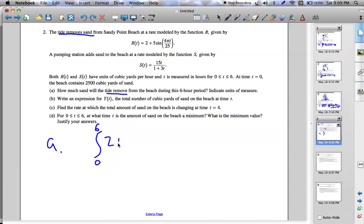So, R of t, which is 2 plus 5 sine of 4 pi t over 25, dx. And this is a calculator section.